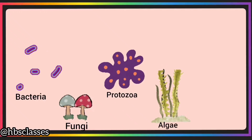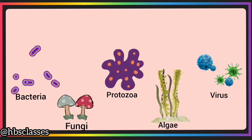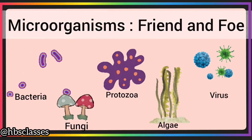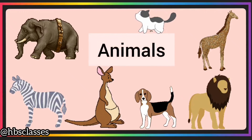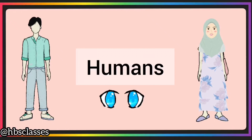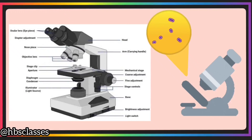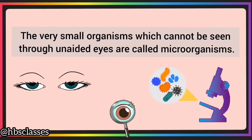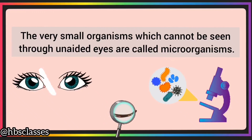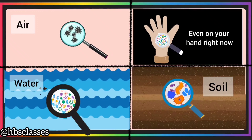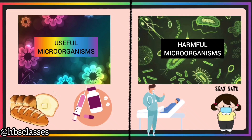Today we will start Chapter 2 of your science book: Microorganisms - Friend and Foe. Some living organisms such as plants, animals, and humans are large enough to be seen with the naked eye, but some living organisms are so small that we need a powerful lens or a microscope to see them. These are called microorganisms or microbes. The very small organisms which cannot be seen through naked or unaided eyes are called microorganisms. Some microorganisms are very useful to us and some are harmful.